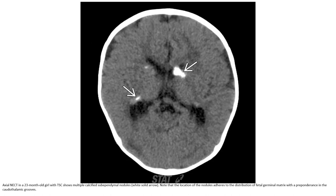Non-contrast enhanced CT in a 23-month-old girl with tuberous sclerosis shows multiple calcified subependymal nodules. Note that the location of the nodules adheres to the distribution of the caudal germinal matrix, with a preponderance in the caudothalamic region.